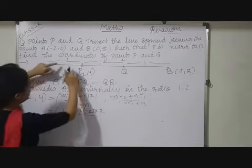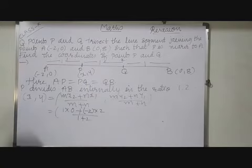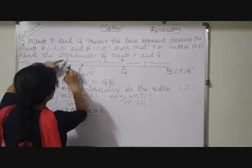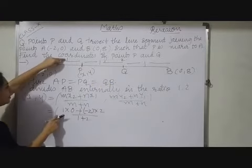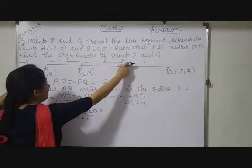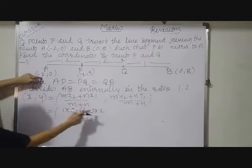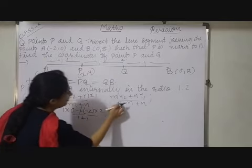So 1 into 0 plus minus 2 into 2 upon M plus N, that is 1 plus 2. Now see as per this formula let's check. M X2. So this is our M and X2 is this one. So 1 into 0. See here I have written. Then N X1. This is our N and this is our X1. So 2 into minus 2. Here we got. So see how much simple it is. Now see we will find out this coordinate.